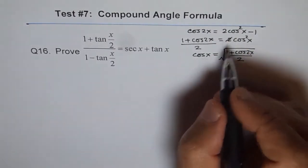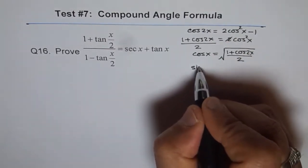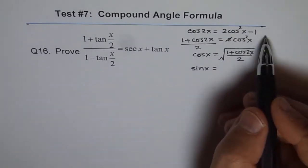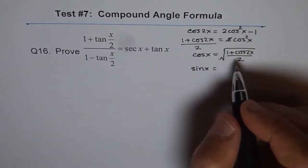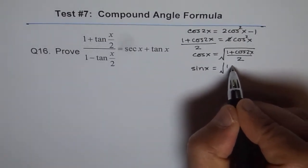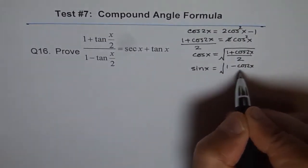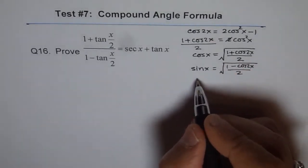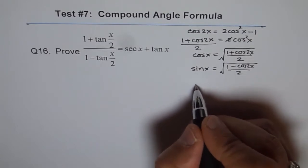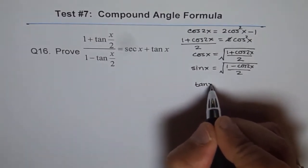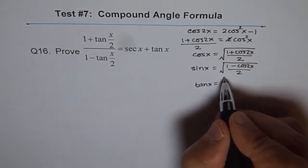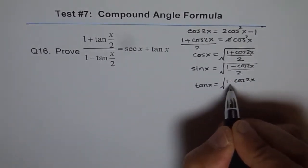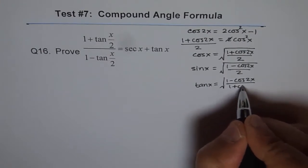Similarly, we can derive the formula for sin x. cos 2x can also be written as 1 − 2sin²x, and when rearranged you get sin x = √((1 − cos 2x) / 2). Since sin x divided by cos x gives tan x, we get tan x = √((1 − cos 2x) / (1 + cos 2x)).